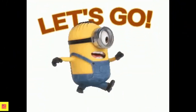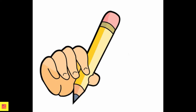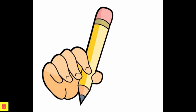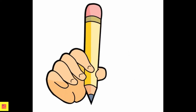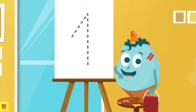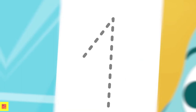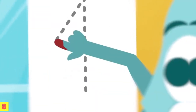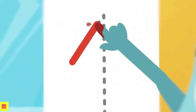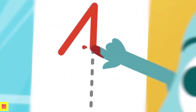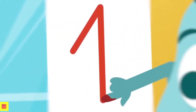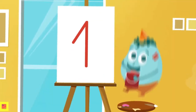Let's go and learn how to write the numbers from 1 to 10. I'll teach you how to write the numbers. Let's start here. We go up and now down here. What number is this? Number 1. Great.